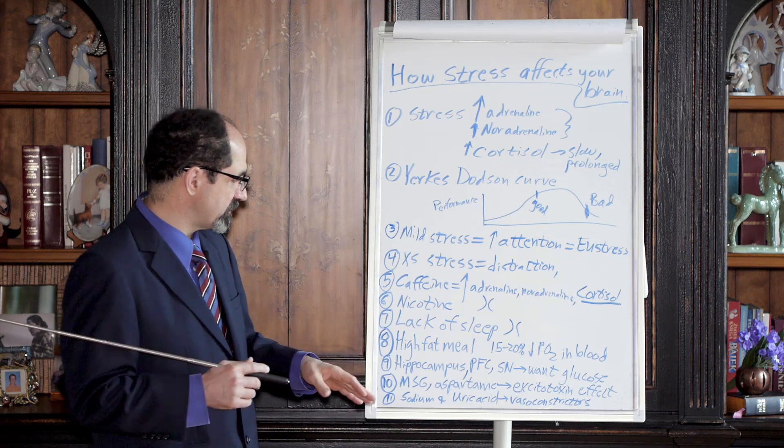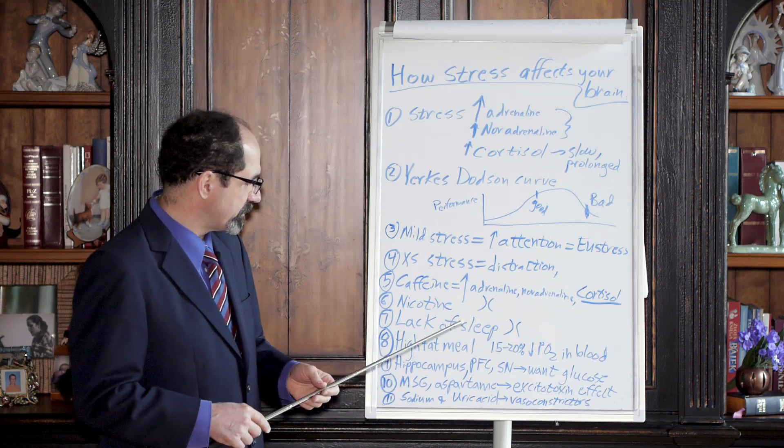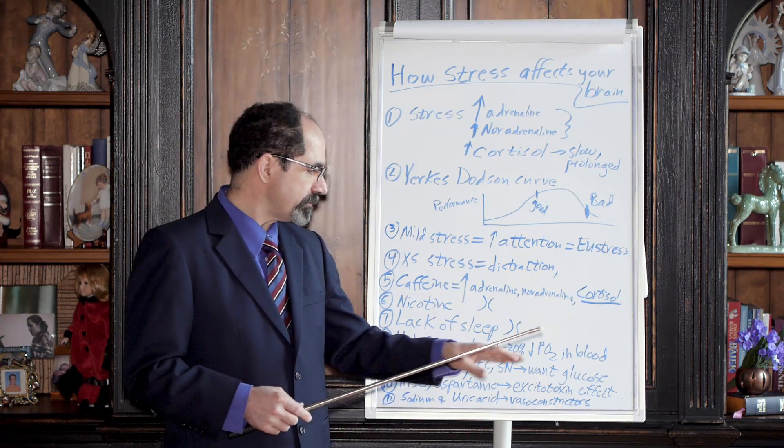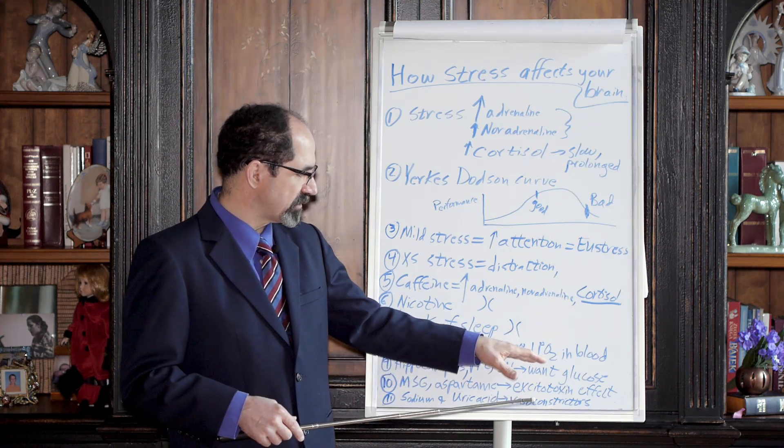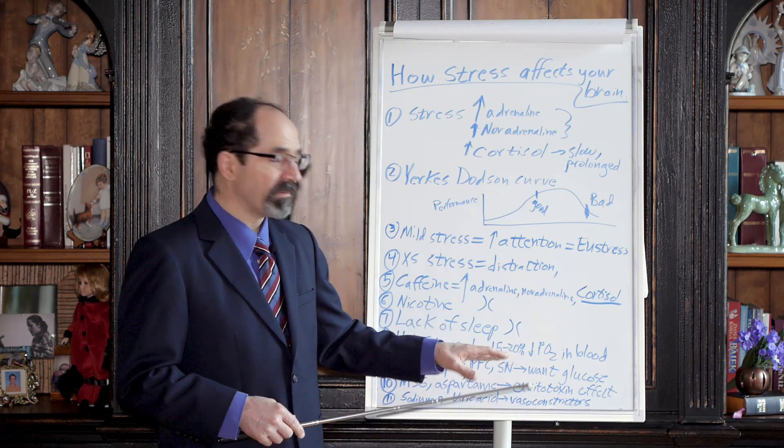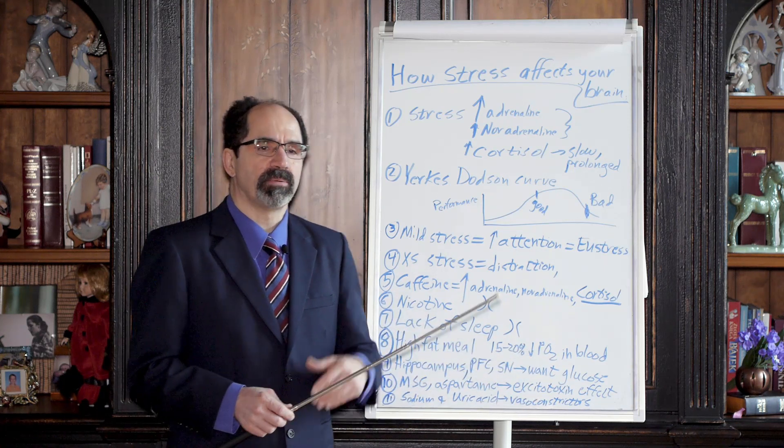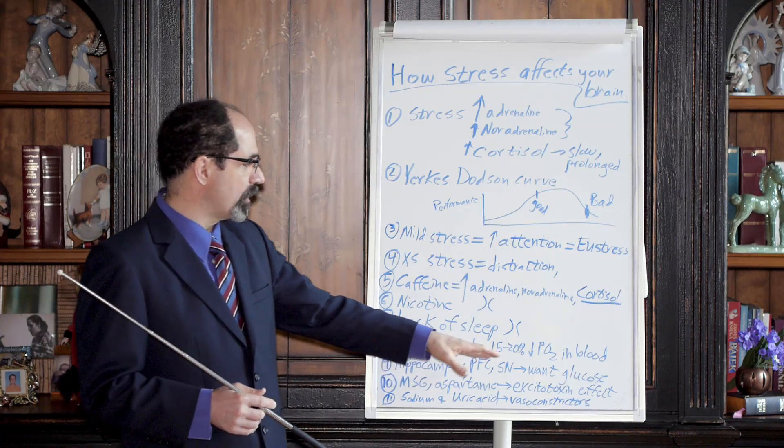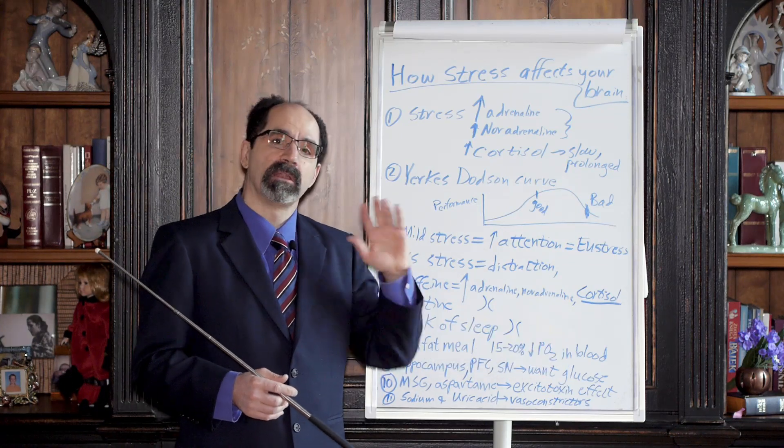What else do people do that's stupid and dangerous? They eat a lot of high-fat meals. When you eat a high-fat meal, it's been shown you lower the partial pressure of oxygen in your arterial blood by 15 to 20%. So you're putting an increased oxygen demand on your stressed-out hippocampus and you're simultaneously lowering your delivery of oxygen to it. Not good.